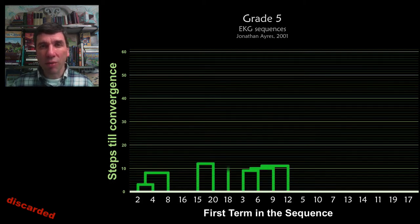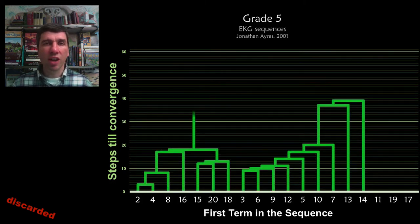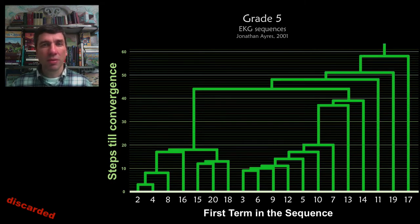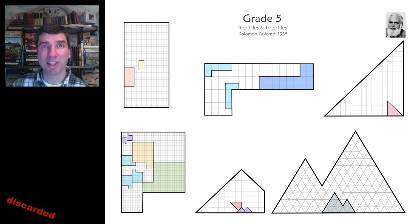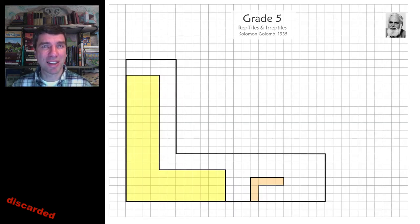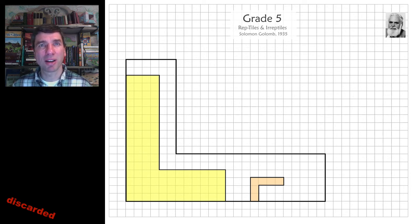EKG sequences are a great way to introduce students to finding common factors between numbers — click the center of the screen for a video explaining this beautiful problem. Another beautiful problem at the intersection of art and math involves reptiles and irreptiles. Here is an L shape with two similar L shapes already placed inside; you have to finish tiling it using all similar shapes. The solution is shown on screen.